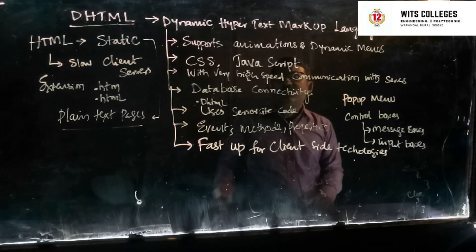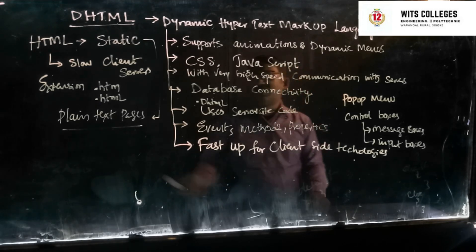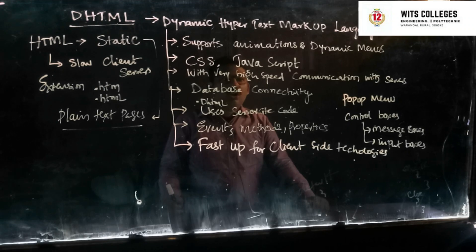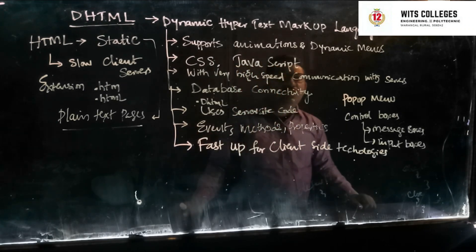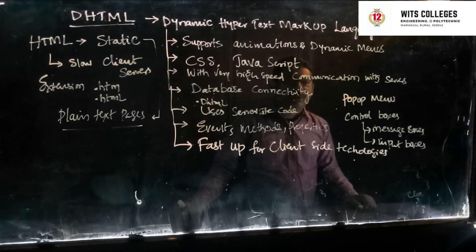DHTML uses database connectivity so that you can connect with the database. DHTML — Dynamic Hypertext Markup Language — is an extension of HTML. Hope you all understood well. In the next session we are going to discuss the practical session regarding the same topic. Thank you very much.